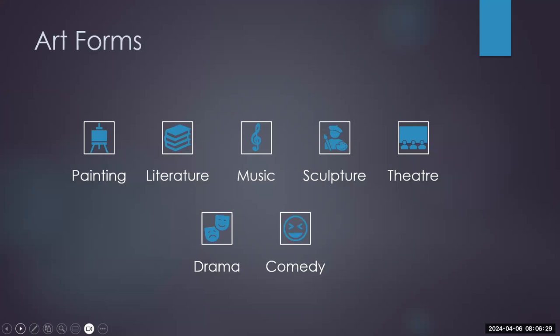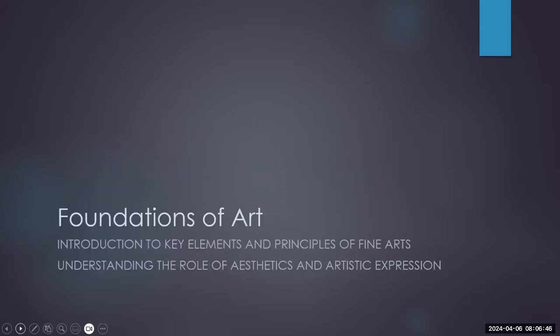Art can come in a lot of different forms. We can see art in a lot of different ways — it's not just a painting. Whenever we talk about art, we also talk about sculptures, drama, and all the different pieces that make up art. We're going to introduce the elements and principles of fine arts, such as line, shape, color, texture, space, and form, and the principles like balance, unity, contrast, rhythm, emphasis, and proportions. We'll also talk about the role of aesthetics and artistic expression.